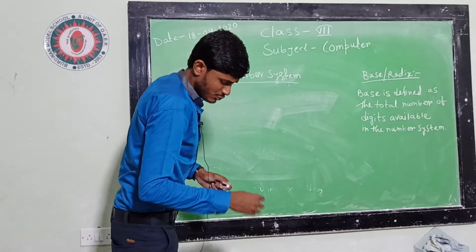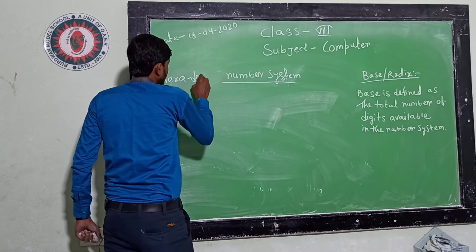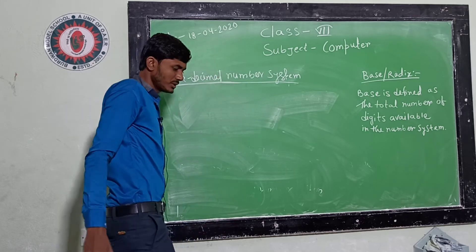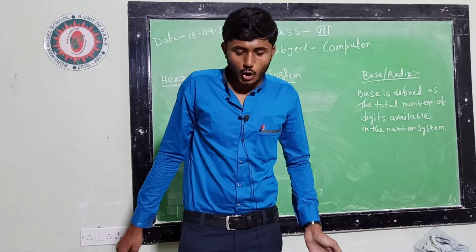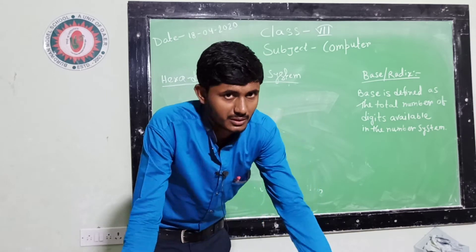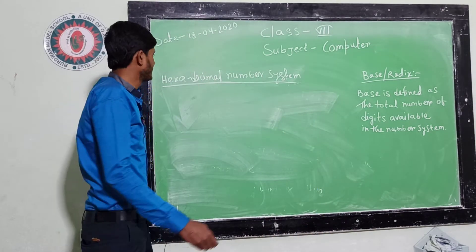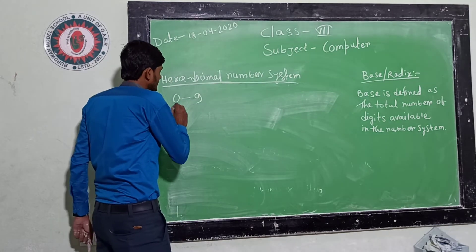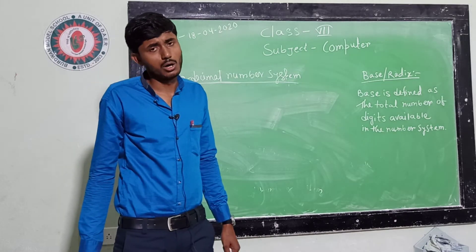The last one is hexadecimal number system. Hexadecimal number system contains total 16 digits, that is from 0 to 9 as numeric or numbers.